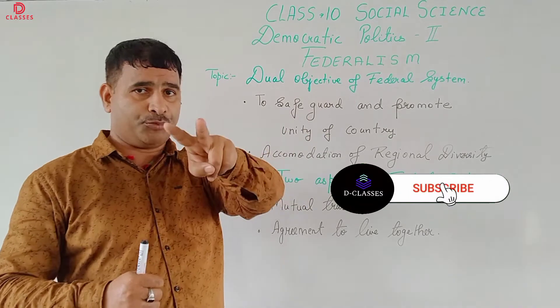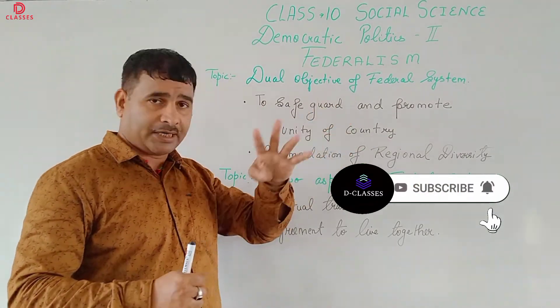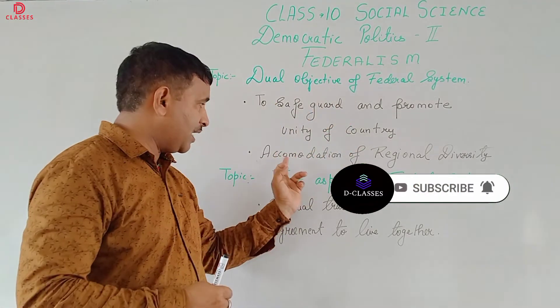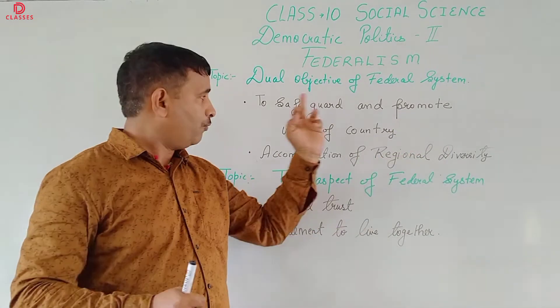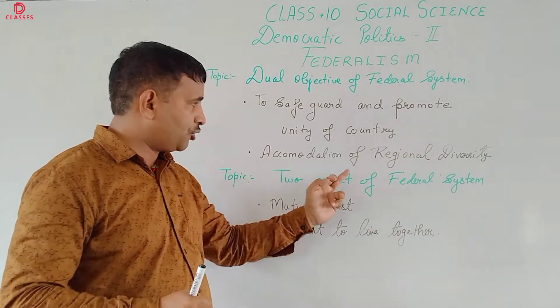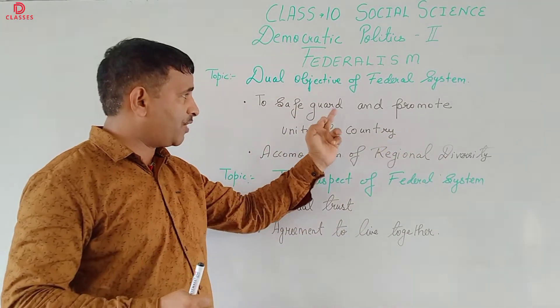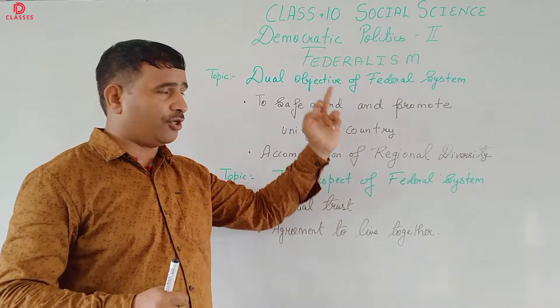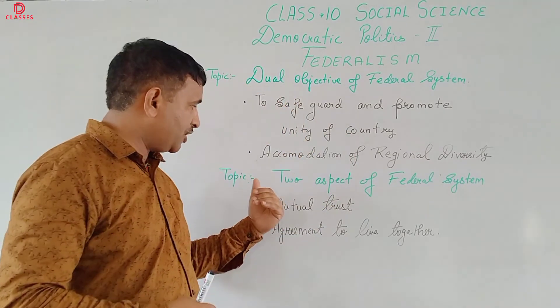The federal system has two objectives. First, to safeguard and promote the unity of the country. Second, accommodation of regional diversity.